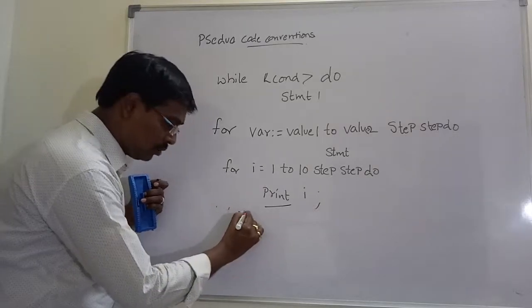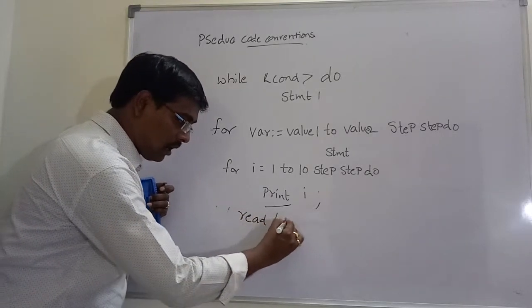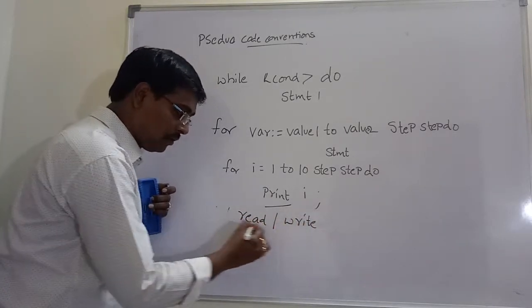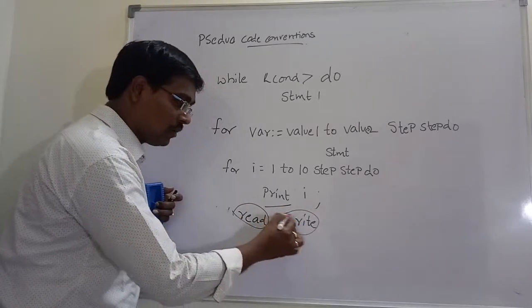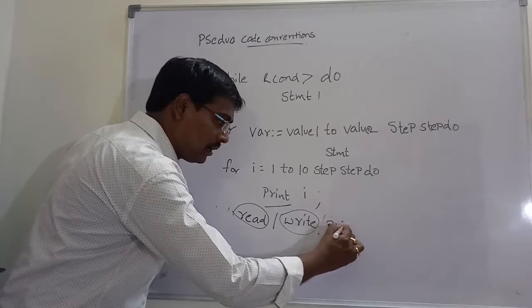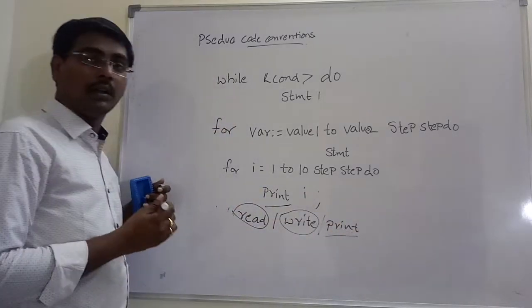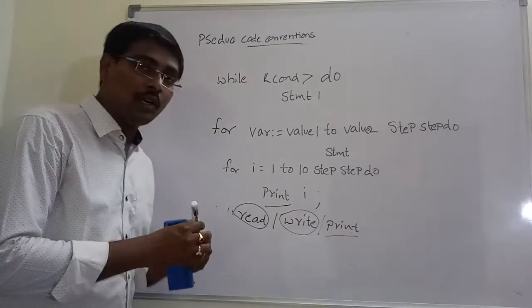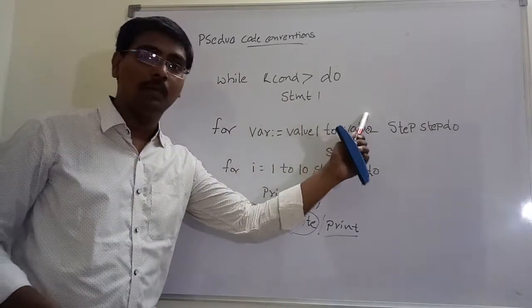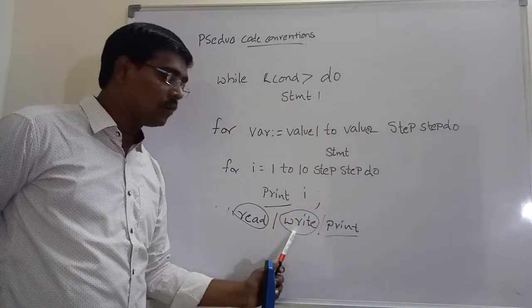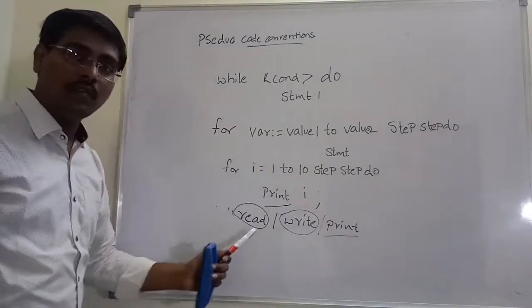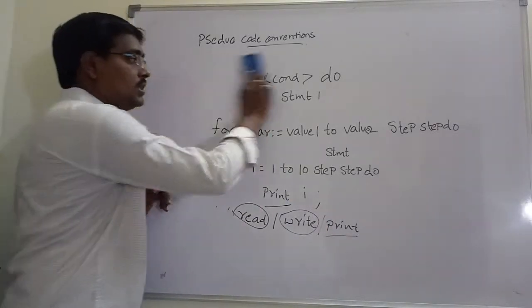Input and output: we are using read or write. For input purpose we are using read. For output purpose we are using either write or directly print. Suppose you read two values, read A comma B. To print some value, print C or write C. Any of the value is acceptable. These are rules.